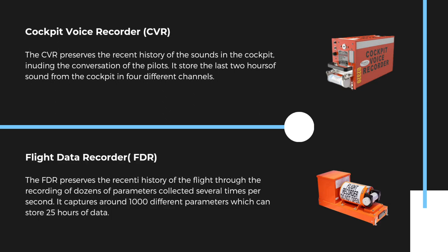The FDR preserves the recent history of the flight through the recording of dozens of parameters collected several times per second. It captures around a thousand different parameters and can store 25 hours of data.